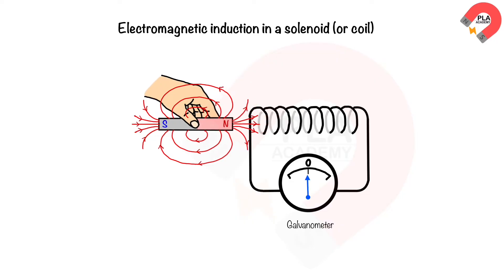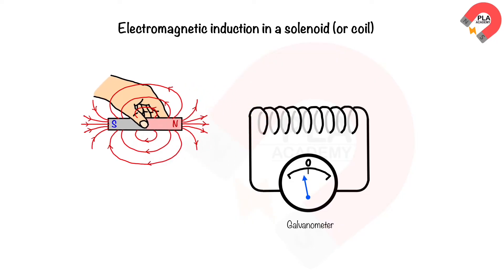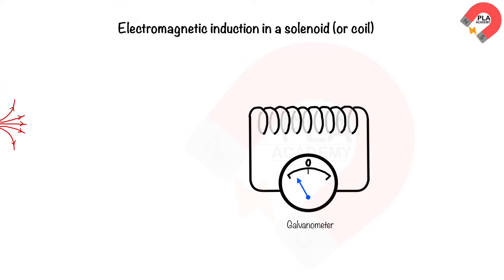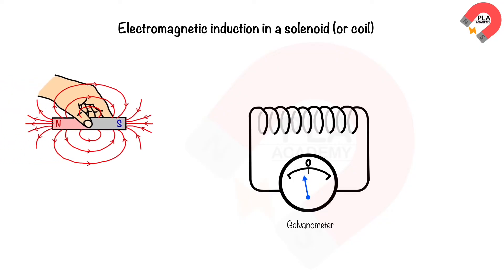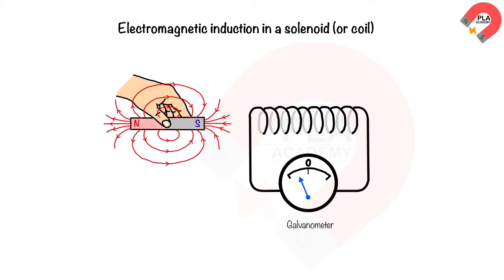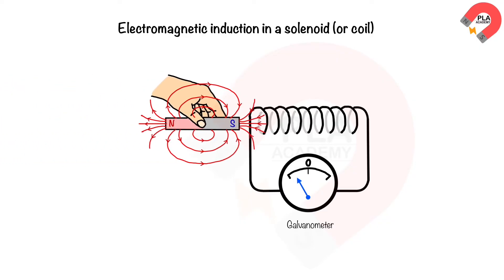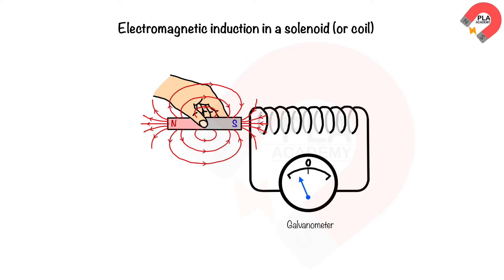When the north pole of the magnet moves away from the solenoid at the same speed, the needle of the galvanometer deflects to the left and then returns to zero. When the south pole of a magnet moves into the solenoid and stops, the needle of the galvanometer deflects to the left and returns to zero.